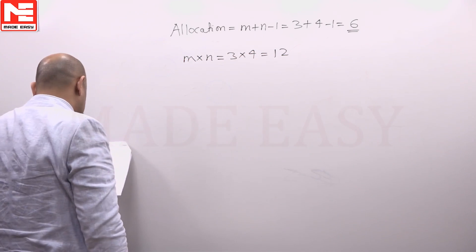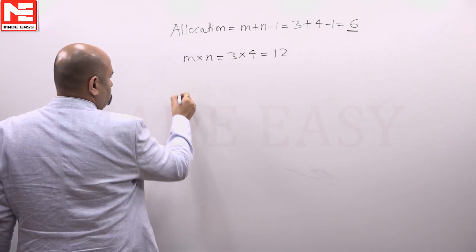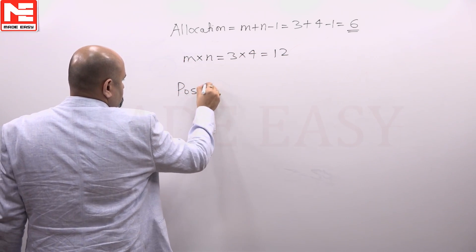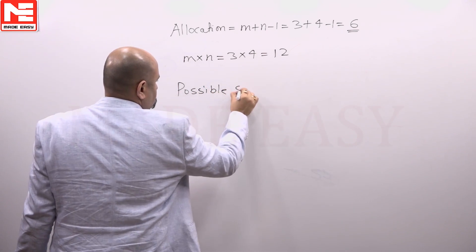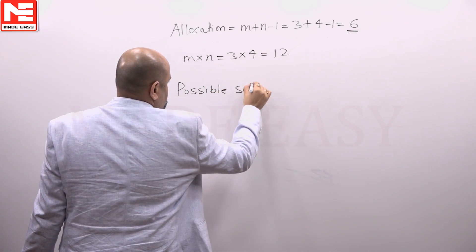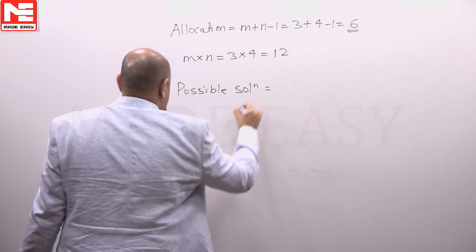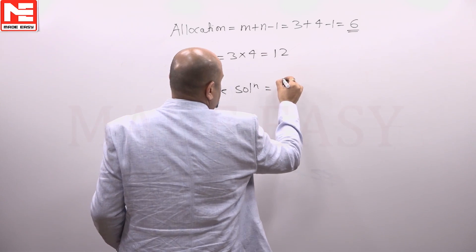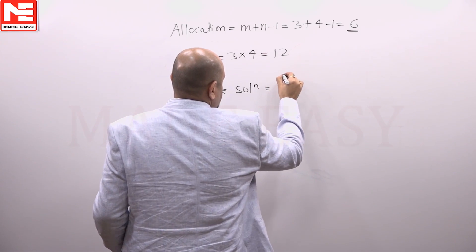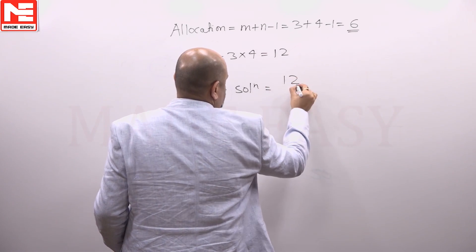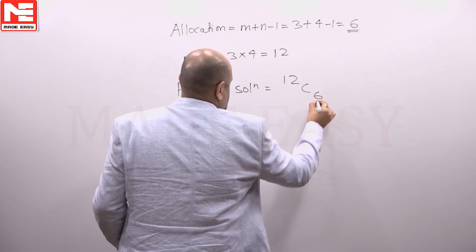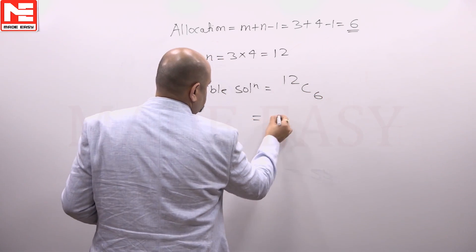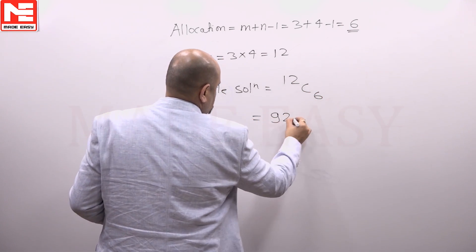The total number of possible solutions is given by 12 combination 6, which comes out to be 924.